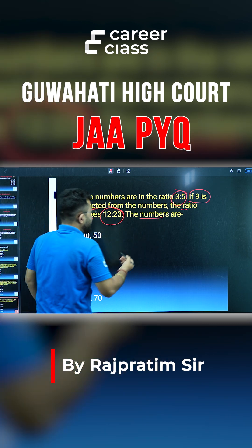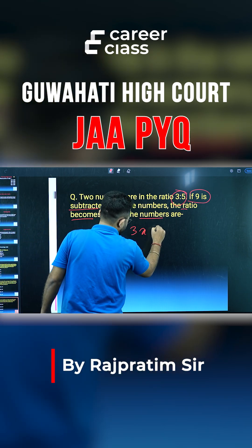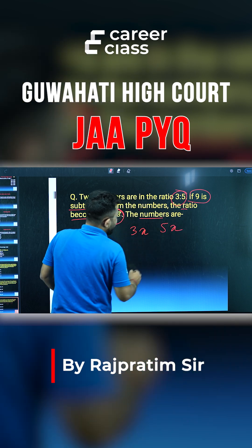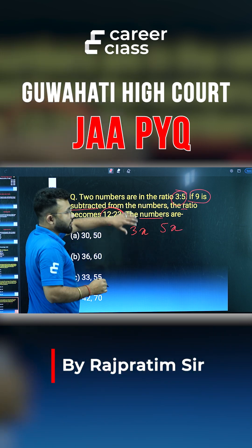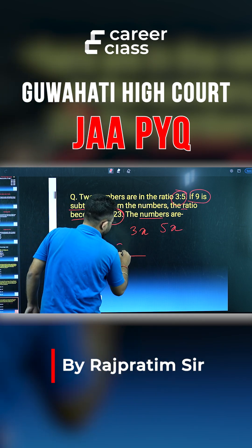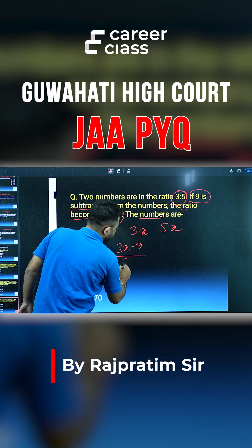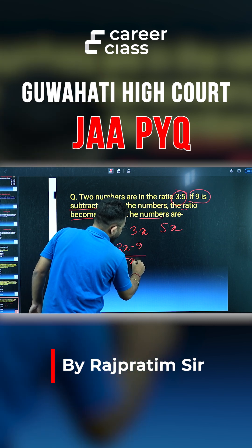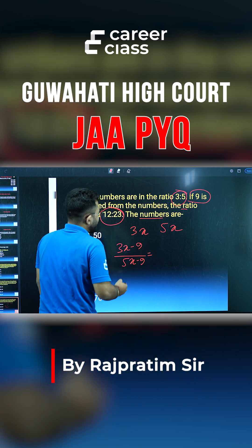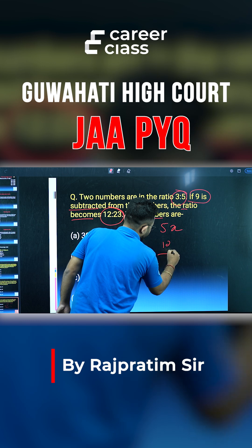So our ratio is 3x to 5x. The condition is: 3x minus 9 is to 5x minus 9. What is the ratio? 12 by 23.